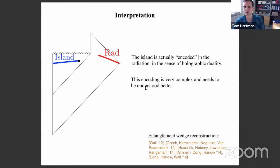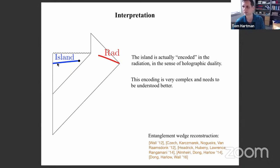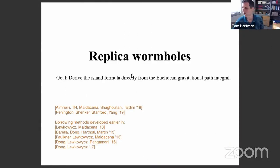This encoding is not understood very well. It has to be very complex, but people are trying to understand it better. What I mean by encoding is that, for example, a field operator phi of x for some point inside the island is actually a very complicated operator in the radiation. You can act with that operator and create stuff inside the black hole and manipulate things inside the black hole. This is a very subtle sort of violation of locality in gravity due to non-perturbative effects.